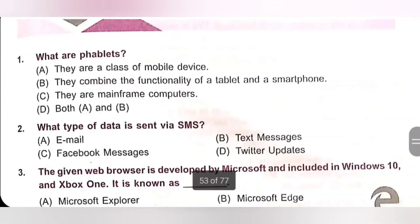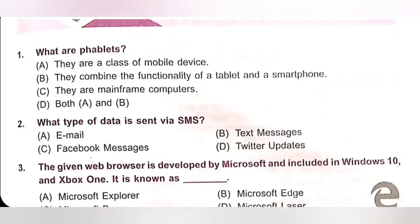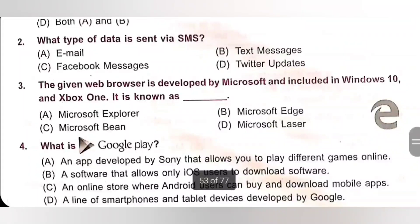Question 1: What are phablets? A. They are a class of mobile device. B. They combine the functionality of a tablet and a smartphone. C. They are mainframe computers. D. Both A and B. Phablets are a class of mobile device and they combine the functionality of a tablet and a smartphone — that is phone and a tablet. So option D, Both A and B, is the correct answer.